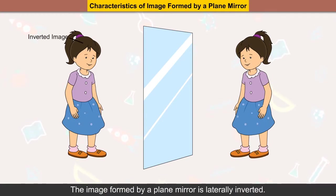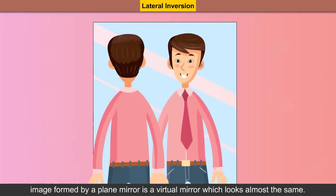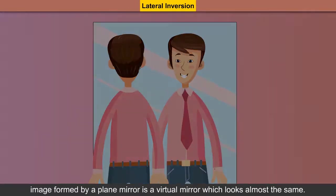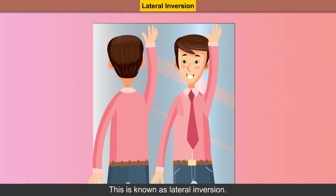The image formed by a plane mirror is laterally inverted. Lateral inversion: the image formed by a plane mirror looks almost the same, but the right side of the object appears to be on the left side, and similarly the left side of the object appears to be on the right. This is known as lateral inversion.